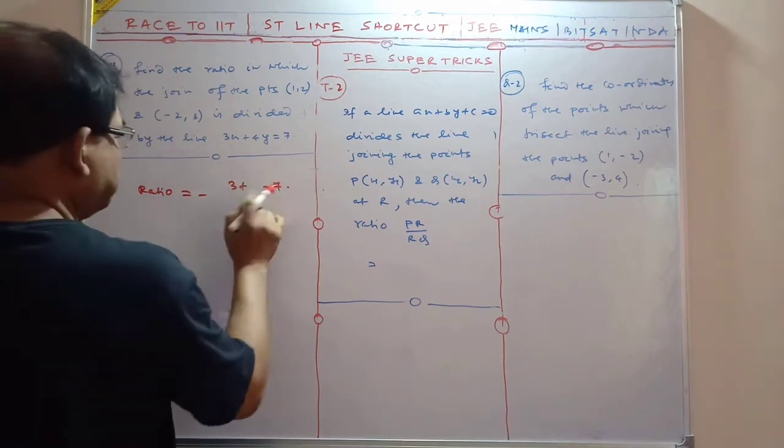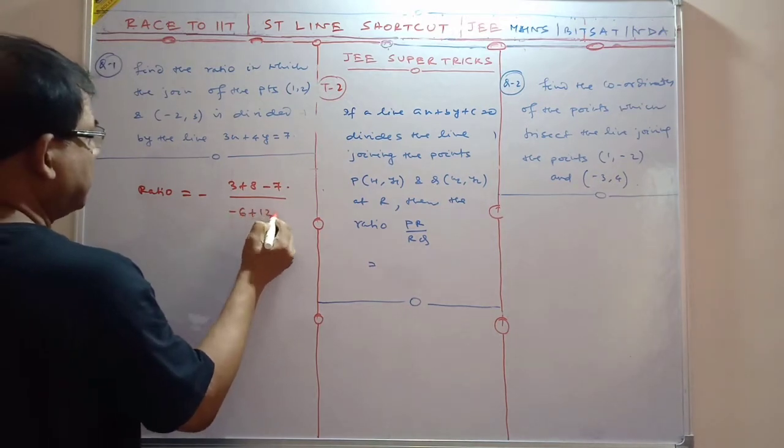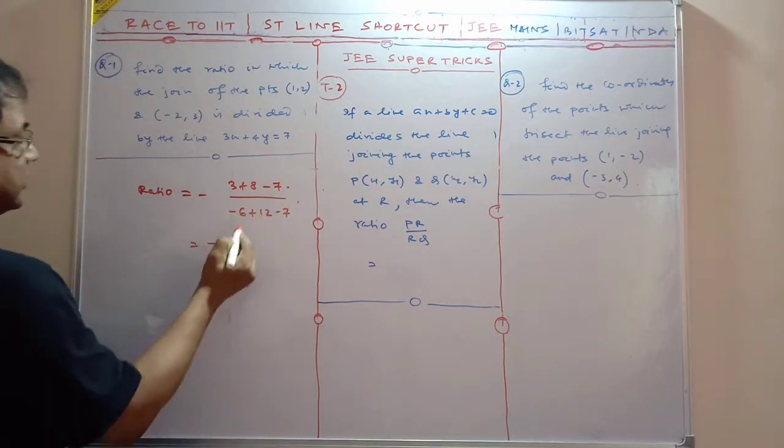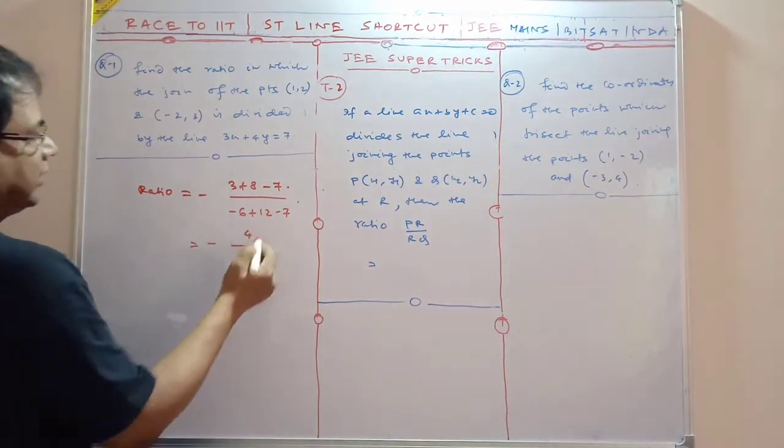So this is 3 plus 8, and so this is -6 + 12 - 78. So that is equal, so this is 4 and 12 minus.